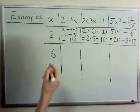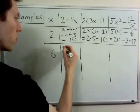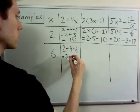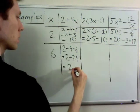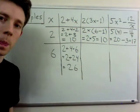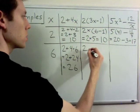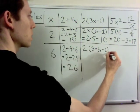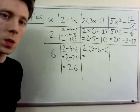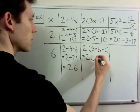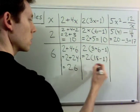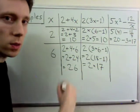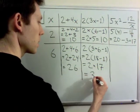Now let's plug in x equals 6. For the first expression, 2 plus 4 times 6: that's 2 plus 24, which is 26. For the second expression, it's 2 times the quantity 3 times 6 minus 1. We finish what's in the parentheses first: 18 minus 1 is 17, giving 2 times 17. Doing the multiplication outside the parentheses gives 34.